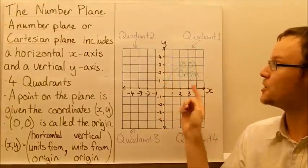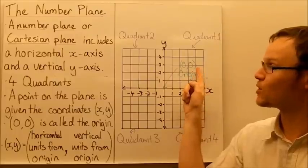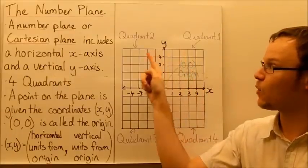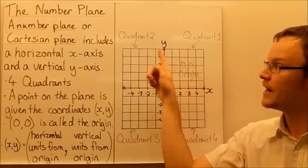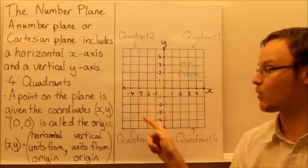Quadrant one occurs where both x and y are positive. So quadrant one is in this corner, then quadrant two, quadrant three, and quadrant four, anti-clockwise.